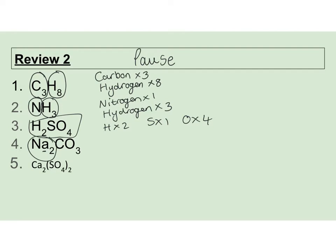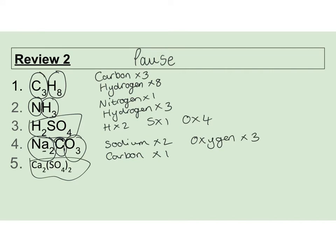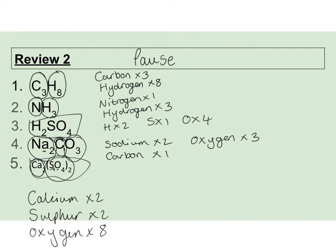Next one - H2SO4: H times two, S times one, O times four. Then Na2CO3: that's sodium times two (Na is a small letter representing sodium, be careful of ones that don't quite fit the trend), carbon times one, oxygen times three. Last one as a challenge - Ca(SO4)2: calcium times one, and inside the bracket they're both capital letters - sulfur times two, oxygen times eight. Be careful of the brackets.